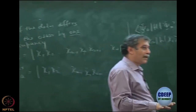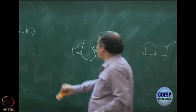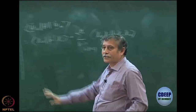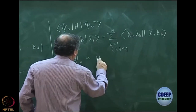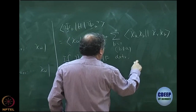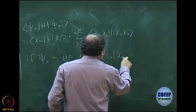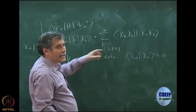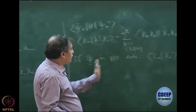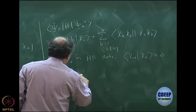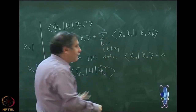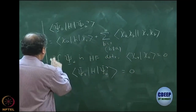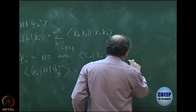This Slater rule is now applied to show Brillouin's theorem. Brillouin's theorem specifically says that ψ₀ is a Hartree-Fock determinant, and χᵣ is orthogonal to all χₐ — in principle all unoccupied orbitals are orthogonal to occupied orbitals. If χᵣ is orthogonal to all χₐ, then ⟨ψ₀|H|ψₐʳ⟩ becomes 0. That is the content of Brillouin's theorem.